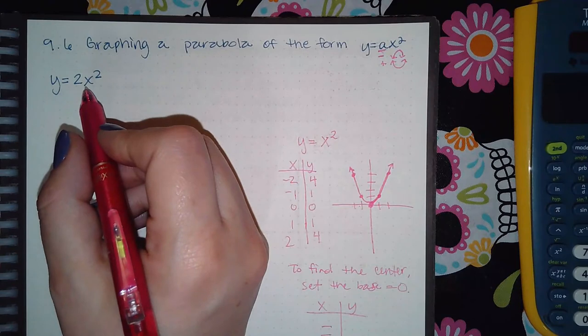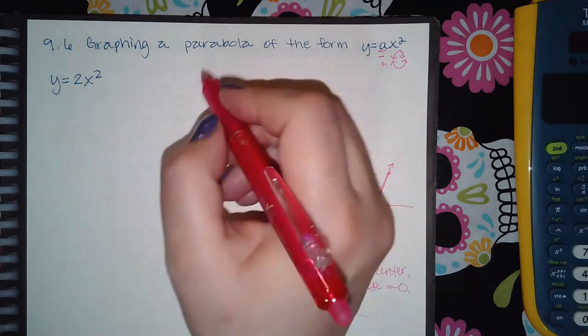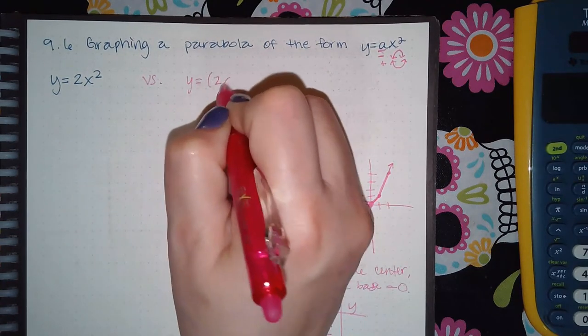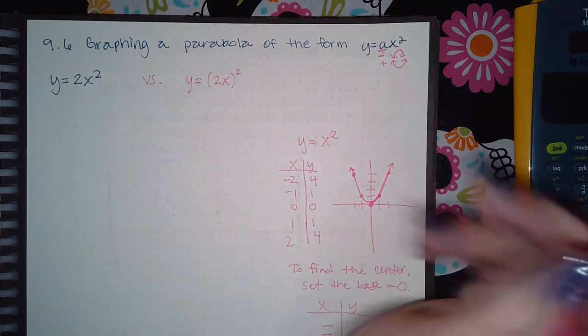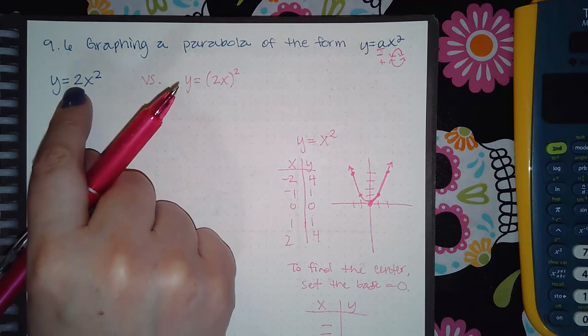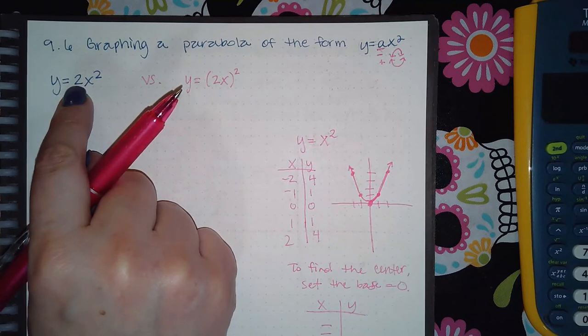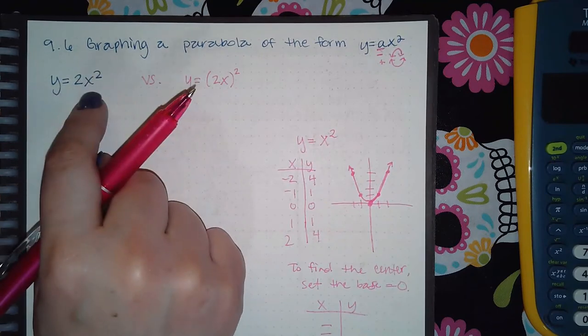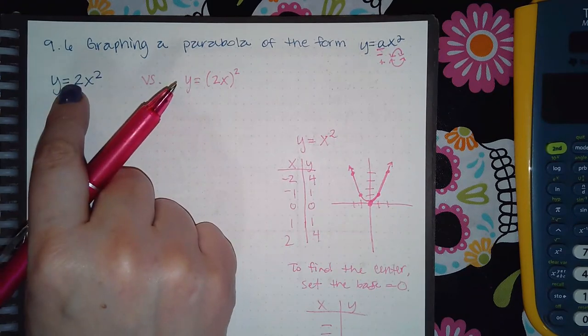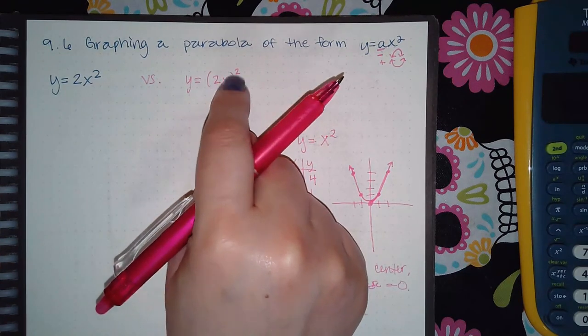It's very important that you understand how to acknowledge your base because there is a difference between this versus this. Here the only thing that is being squared is the x and that two is just a coefficient, it's just a number being multiplied in front of that value.